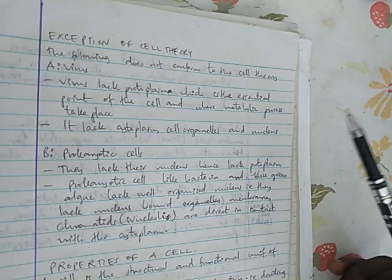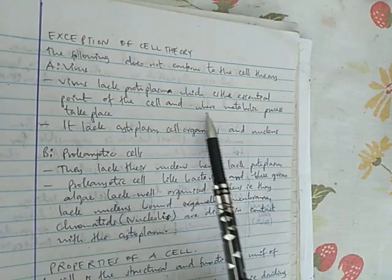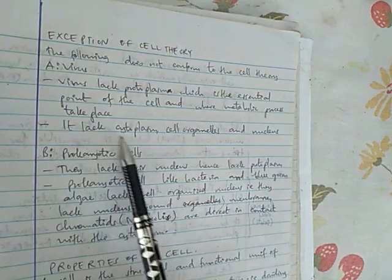So exceptions, the first one is in viruses. Viruses, they lack protoplasm, which is the essential part of the cell, and where metabolic processes take place. Viruses don't have protoplasm, don't have nucleus, don't have cytoplasm. They just have DNA or RNA. But also, it lacks cytoplasm, cell organelles and a nucleus. That is in viruses.